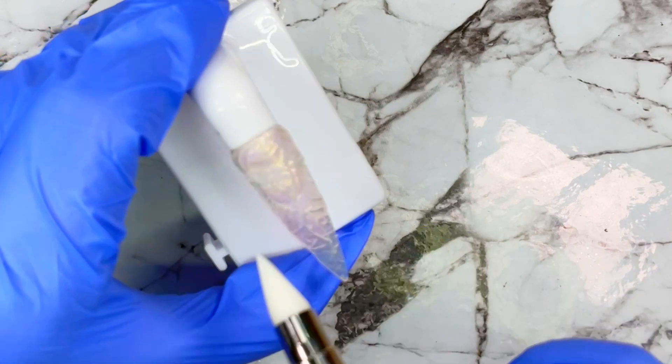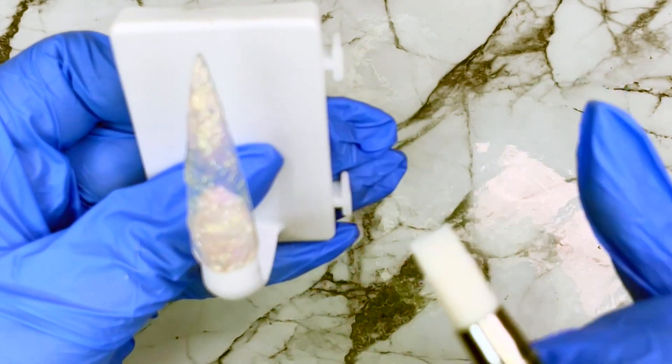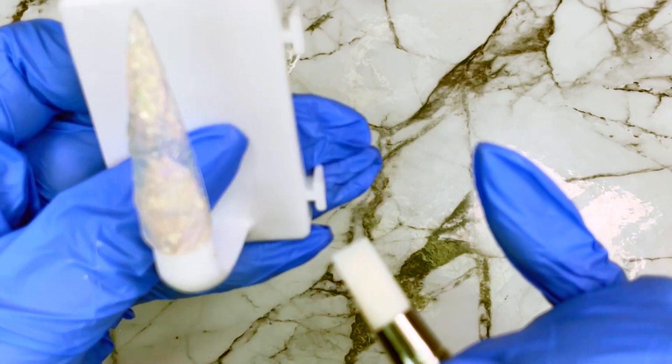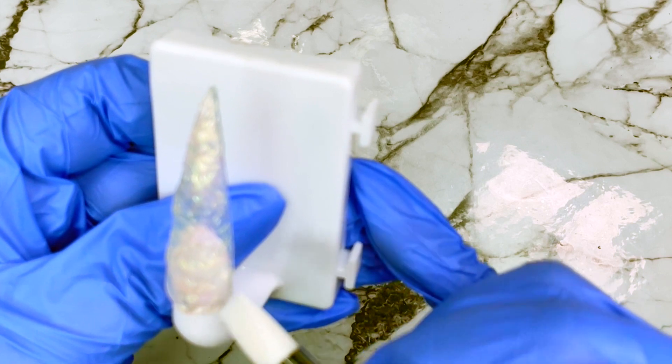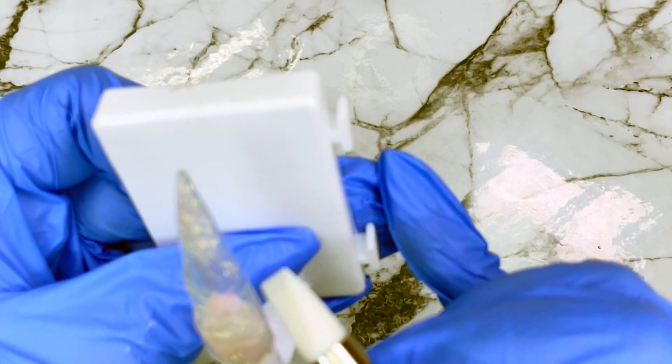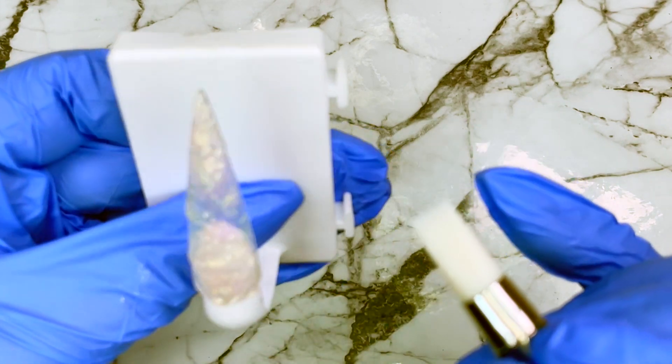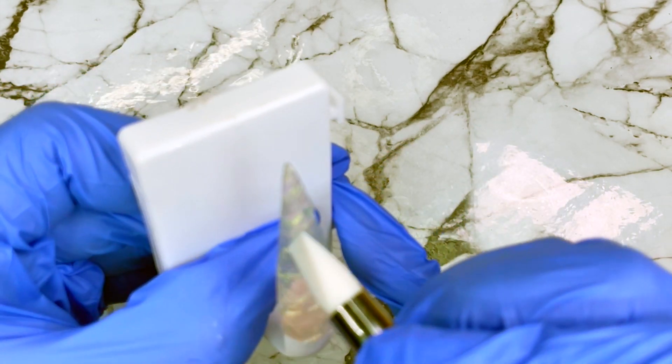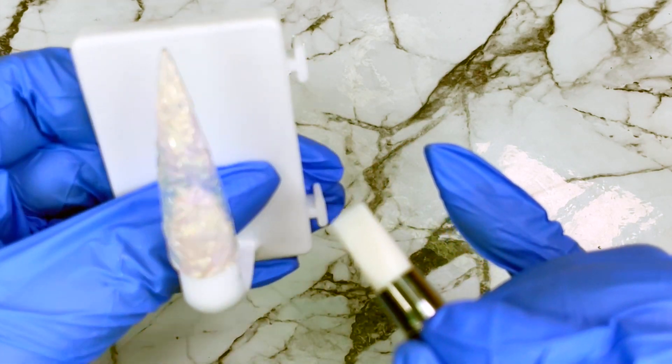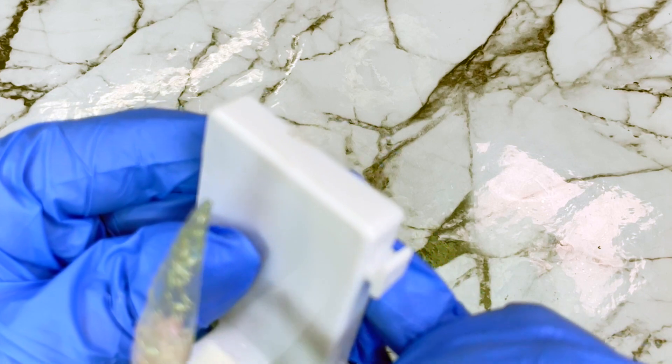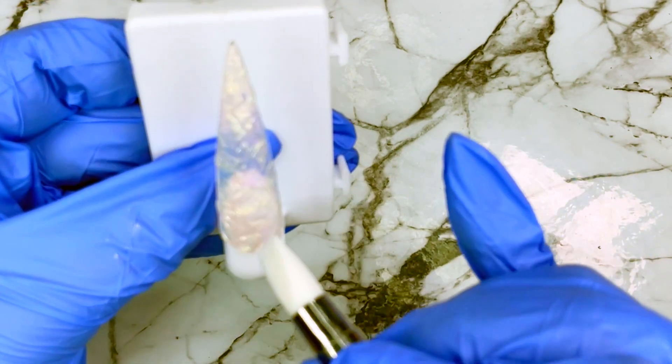If you take the silicone tool and kind of just push into it, it also helps create the shapes that make it look like ice a bit more. I don't want to go too crazy though, like I don't want it to be bumpy looking and all that. So I think I'm just going to cure this.